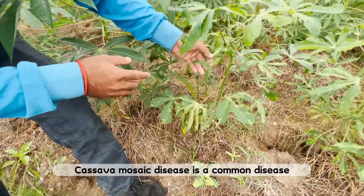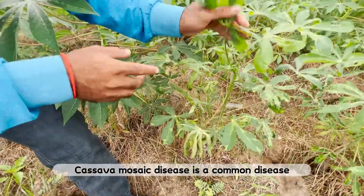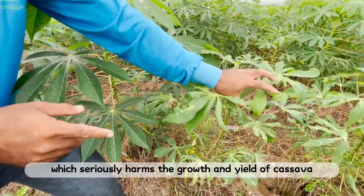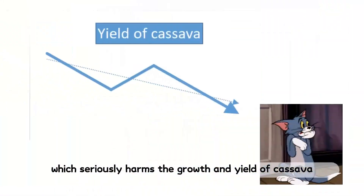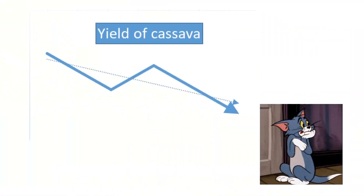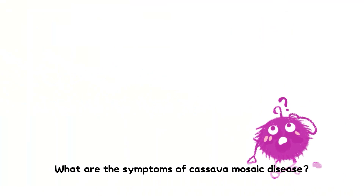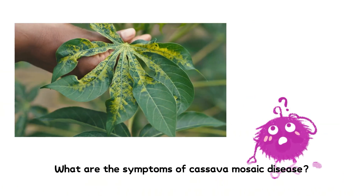Cassava Mosaic disease is a common disease which seriously harms the growth and yield of Cassava. What are the symptoms of Cassava Mosaic disease?